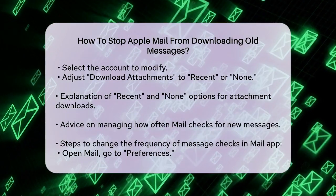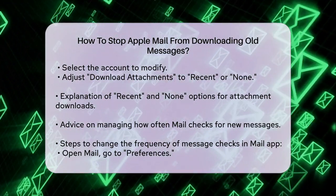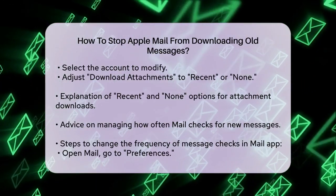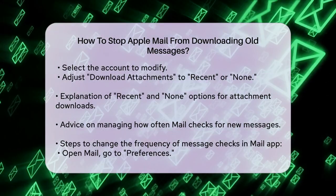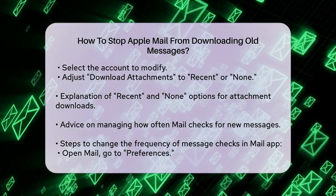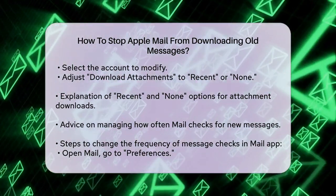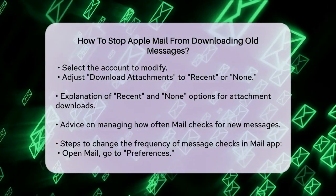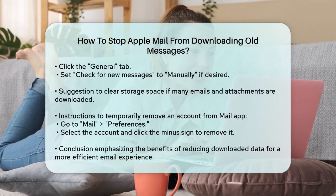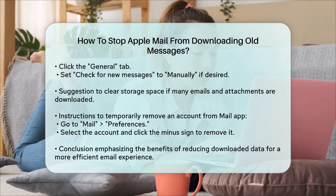If you're still dealing with a lot of old emails being downloaded, another approach is to manage how often the Mail app checks for new messages. Here's how. Open the Mail app, go to Mail in the top menu bar, and select Preferences or Settings. Click the General tab. Under Check for New Messages, you can choose how often you want Mail to check for new messages. If you set it to Manually, you'll need to click in the Mail toolbar to check for messages.